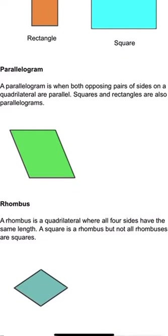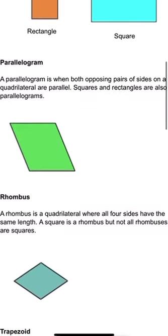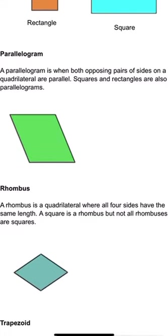Now, a parallelogram. A parallelogram is when both opposing pairs of sides on a quadrilateral are parallel. Squares and rectangles are also parallelograms.